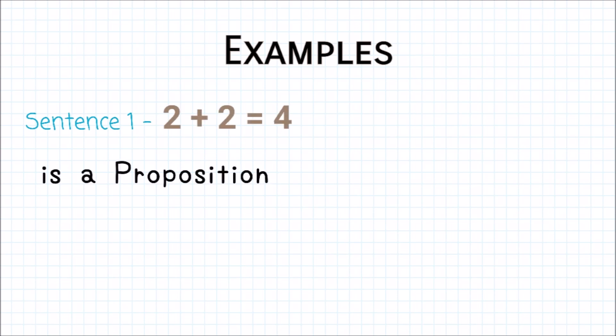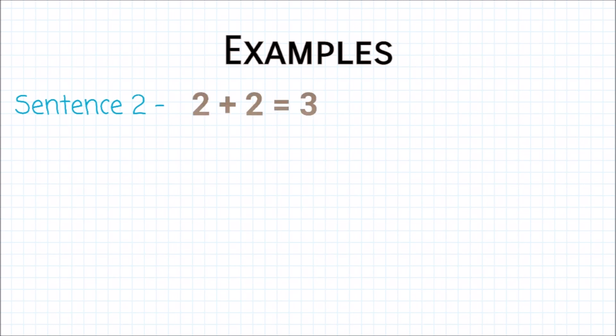For example, sentence 1: 2 plus 2 is equal to 4. This sentence is a Proposition because 2 plus 2 equals to 4 is true. Sentence 2: 2 plus 2 is equal to 3. This sentence is also a Proposition because it is false.